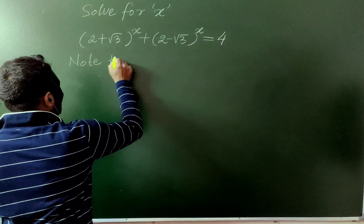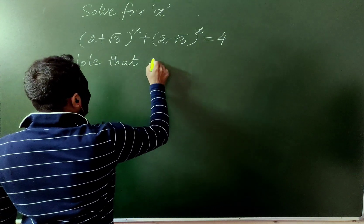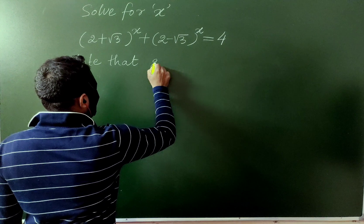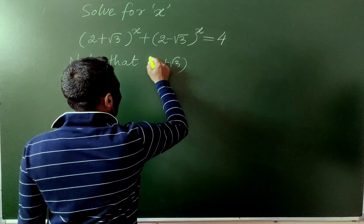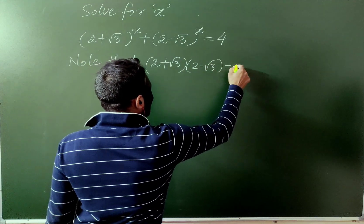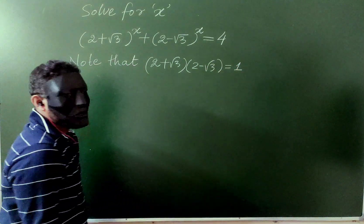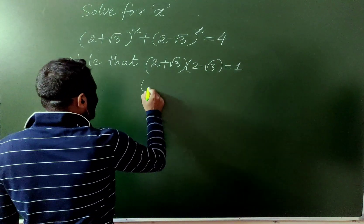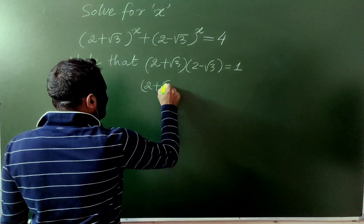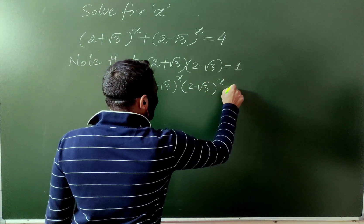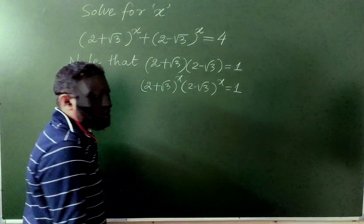We see that if you multiply these two, this is one, using the a plus b and a minus b formula. And even if you multiply with any power, this always gives one.